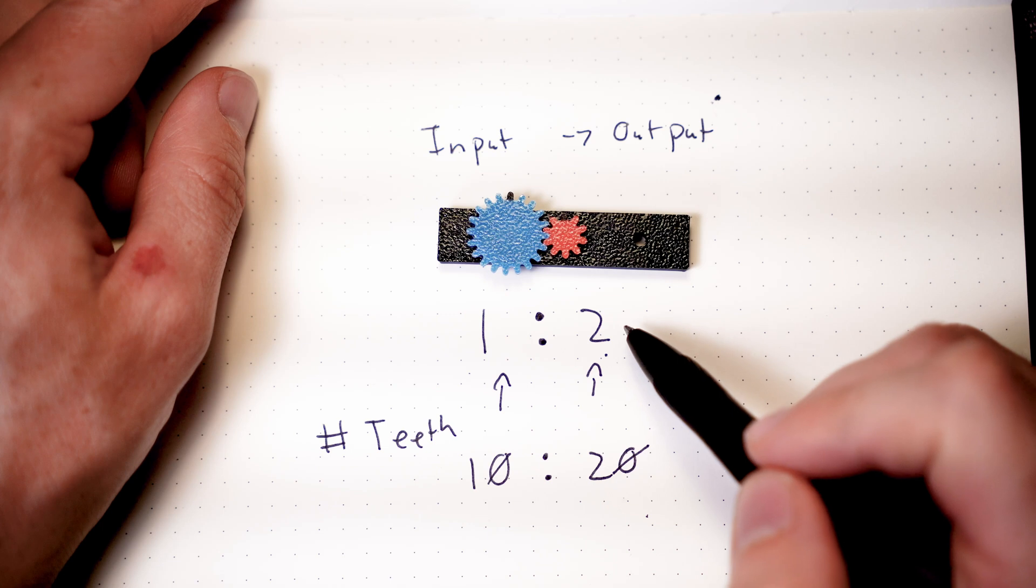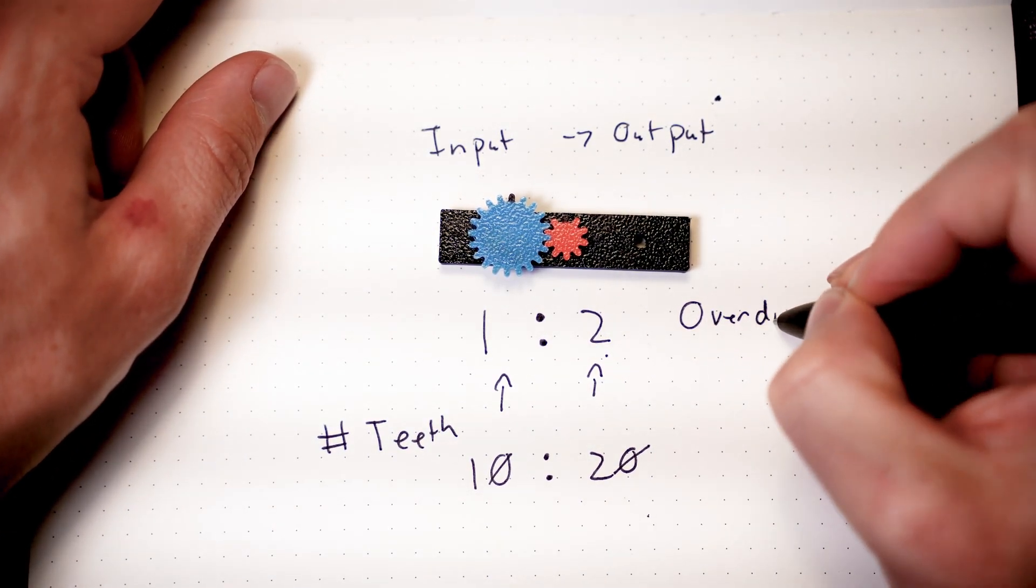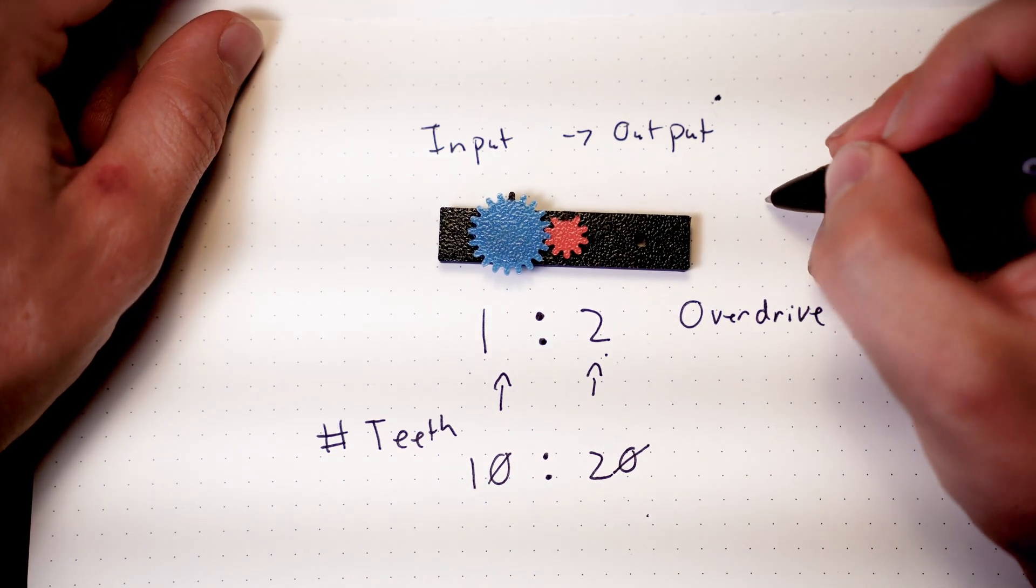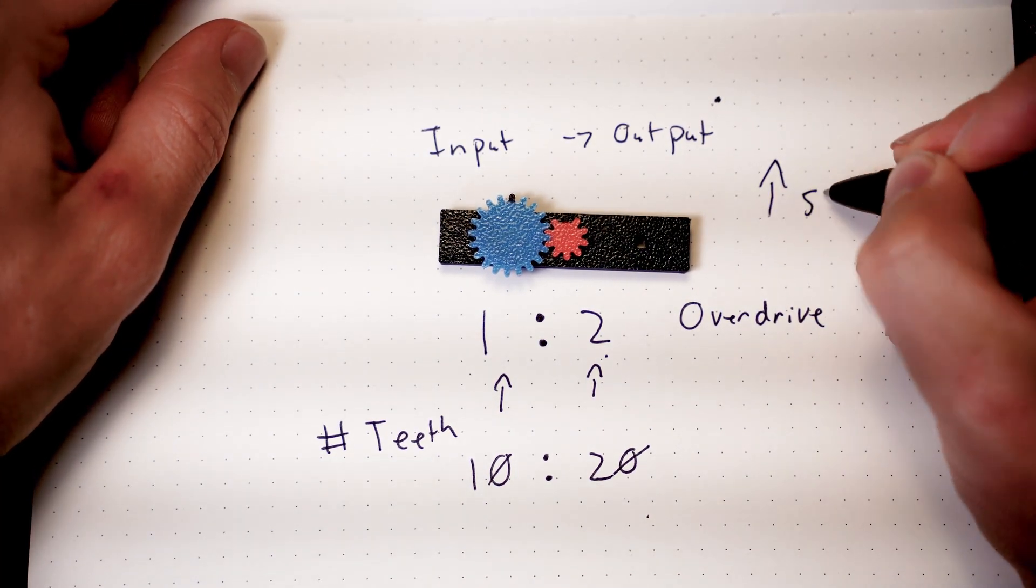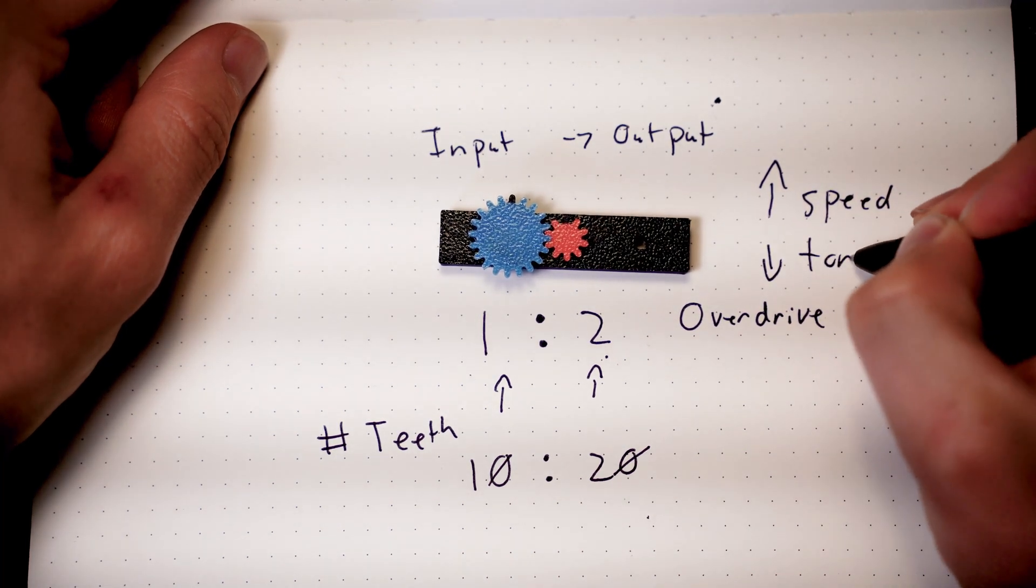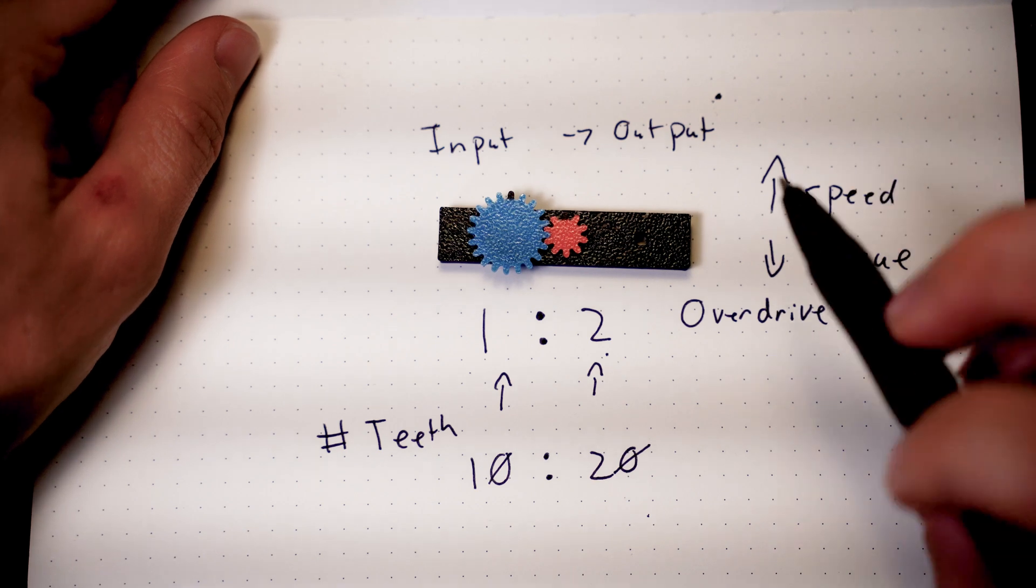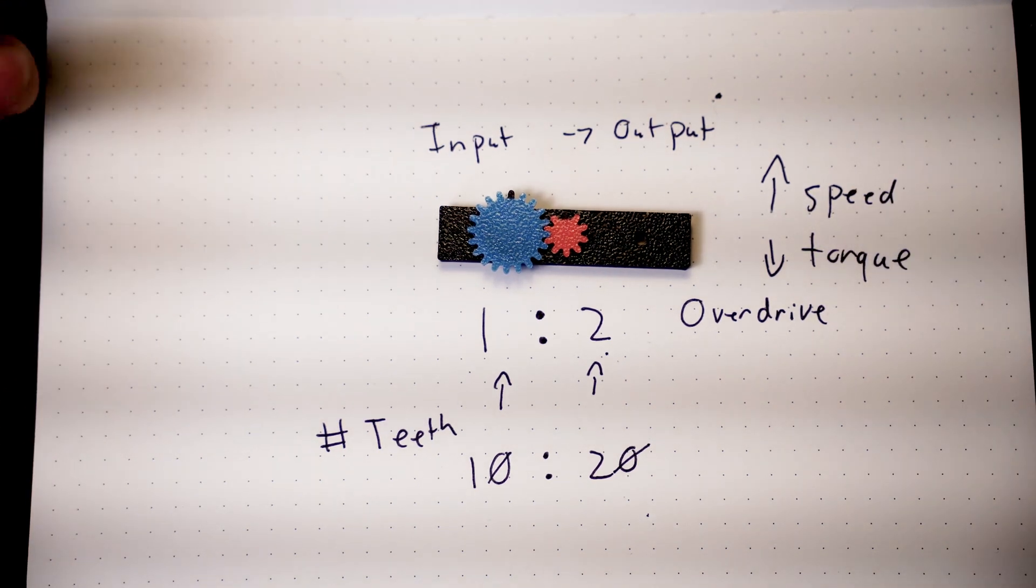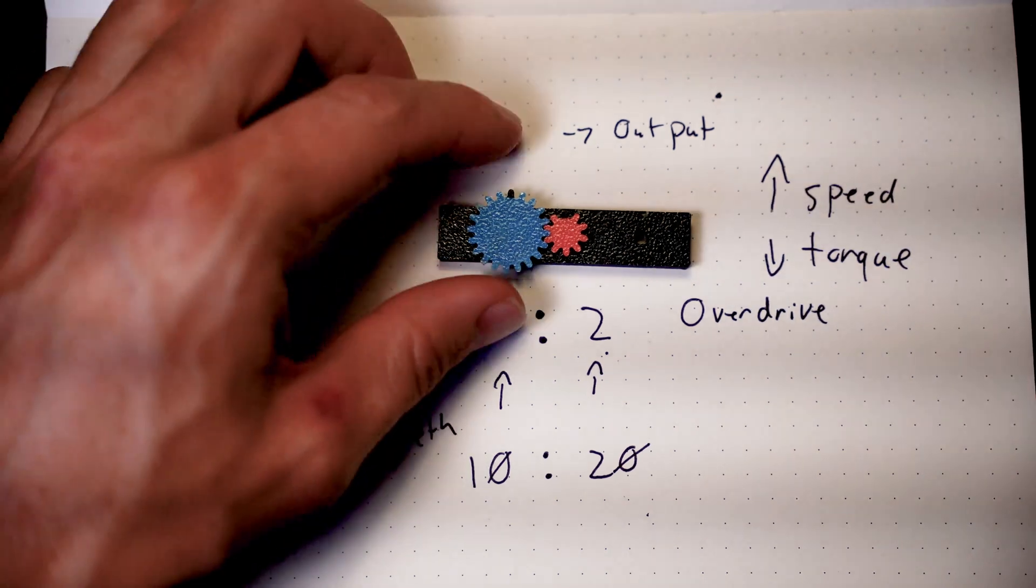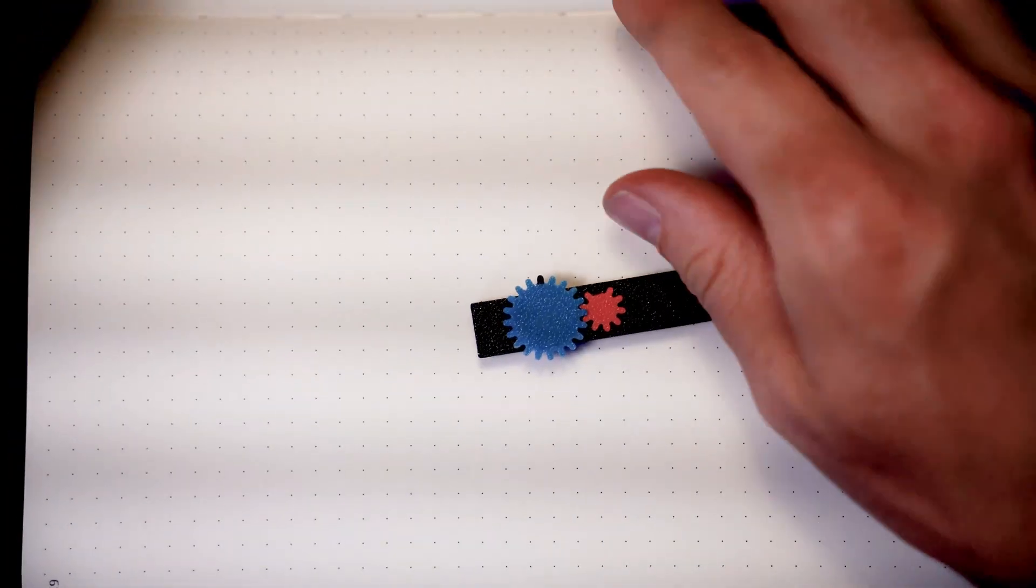If you go from smaller to larger in number, this is called overdrive. And in an overdriven system, you're going to increase your speed but decrease your torque. And torque is a measurement of rotational force. And of course, speed is just velocity, how quick you are moving through something. So let's take a look at that a little deeper so we can understand how that speed and torque works.